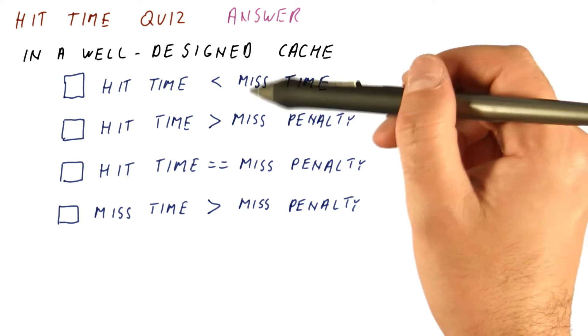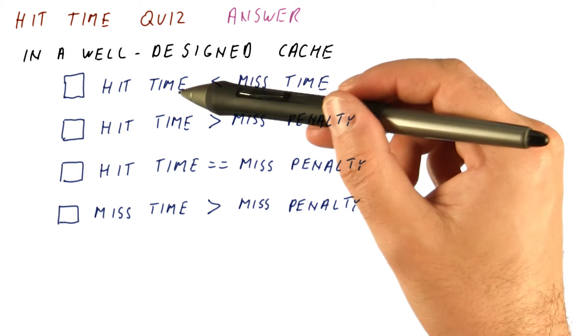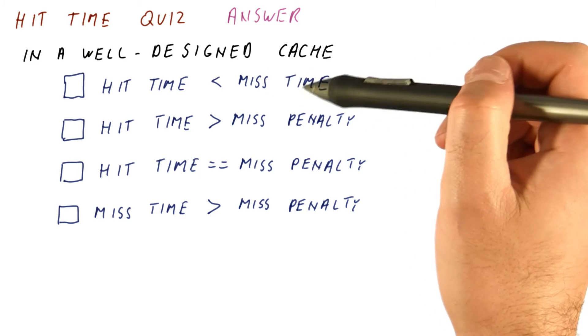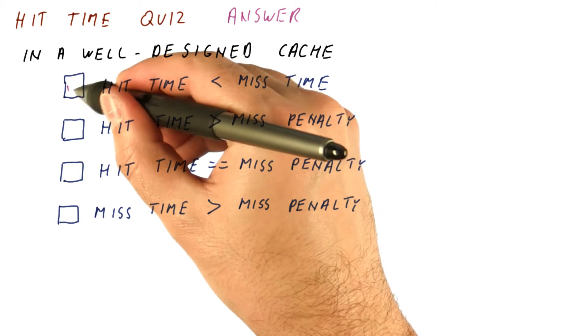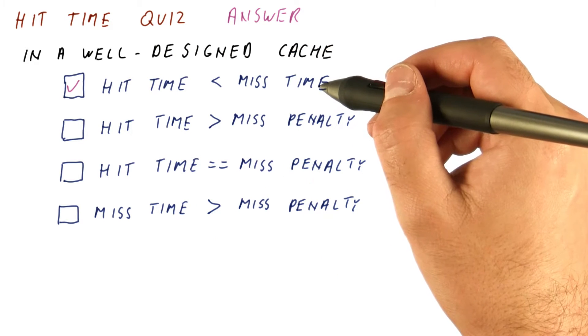And that means that the miss time should not be anywhere close to the hit time. And if there is any miss penalty, miss time will be larger than hit time anyway. So this should be true for every cache even if you didn't design it very well.